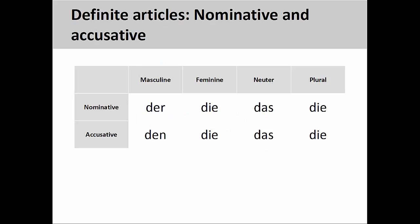You will also recall that each noun gender — masculine, feminine, neuter — and plural nouns have their own definite article, and that the masculine definite article is the only one that changes as it moves from the nominative to accusative case. You may wish to review the presentations on nominative and accusative cases before continuing with this one.